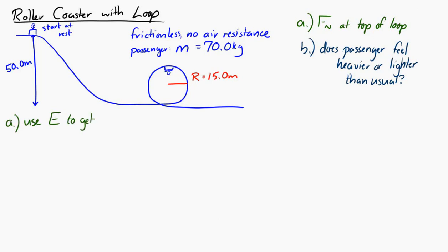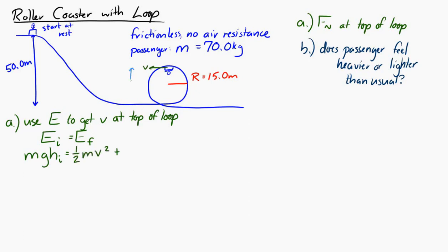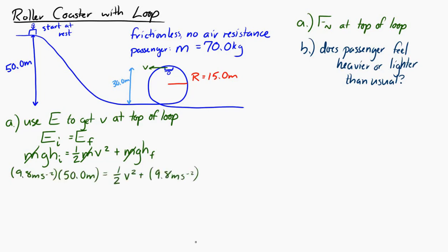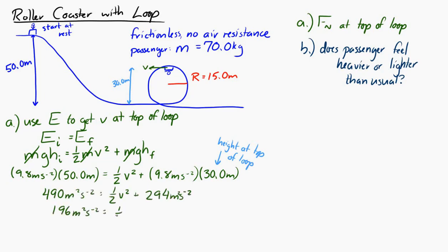First, we use energy conservation to find the speed at the top of the loop. The energy at the top of the hill equals the energy at the top of the loop: MGH equals one-half MV² plus MGH. We can cancel mass, leaving G times H equals one-half V² plus G times the loop height. Plugging in the numbers and doing the math, the speed at the top of the loop is 19.8 meters per second.